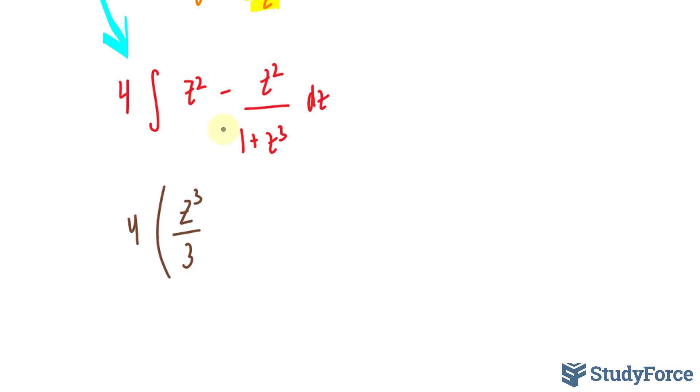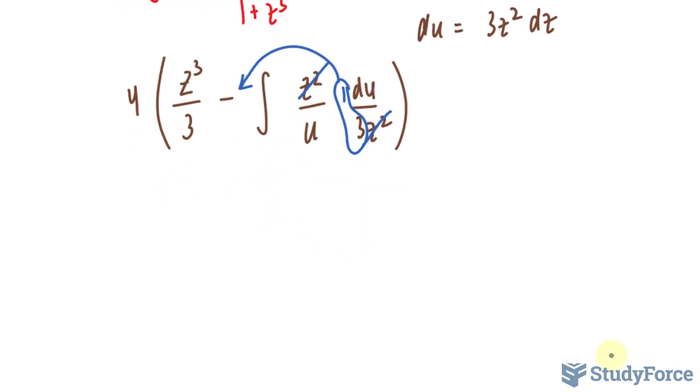And over here, like I said, I need to do a substitution. So I'll set u is equal to 1 plus z to the power of 3. Taking the derivative with respect to z, I end up with du is equal to 3z to the power of 2 dz. Where I end up with, I'll rewrite some of this, z to the power of 2 over u. Now solving for dz, I end up with du over 3z squared. This will cancel out. With this, I can pull out the third. I don't need to worry about that.